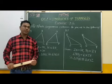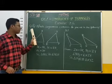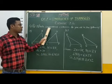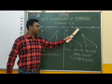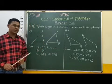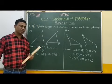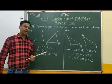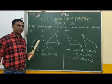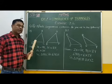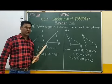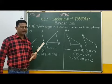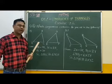Good morning students. In this video we are going to solve question number 1 of exercise 7.2. The question is: which congruence criterion do you use in the following? Here in each sub-question, figures of two congruent triangles are given, and between these two congruent triangles, corresponding equal parts are also given. We have to identify by which congruence criterion these two triangles are congruent.